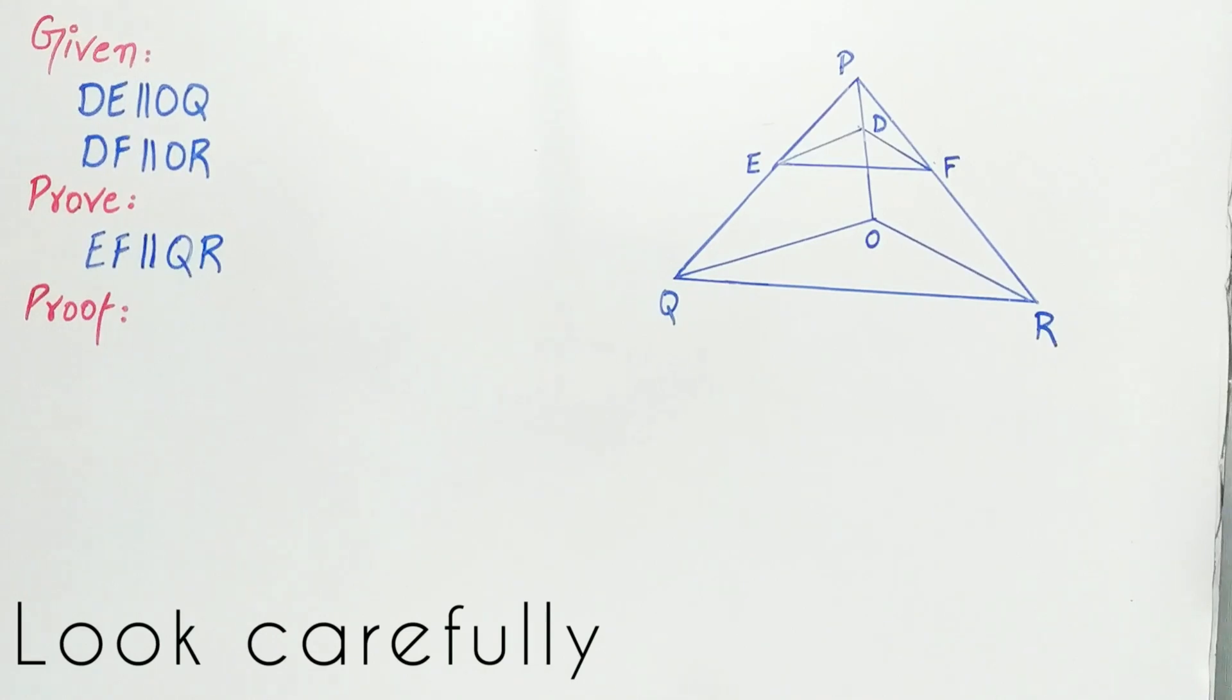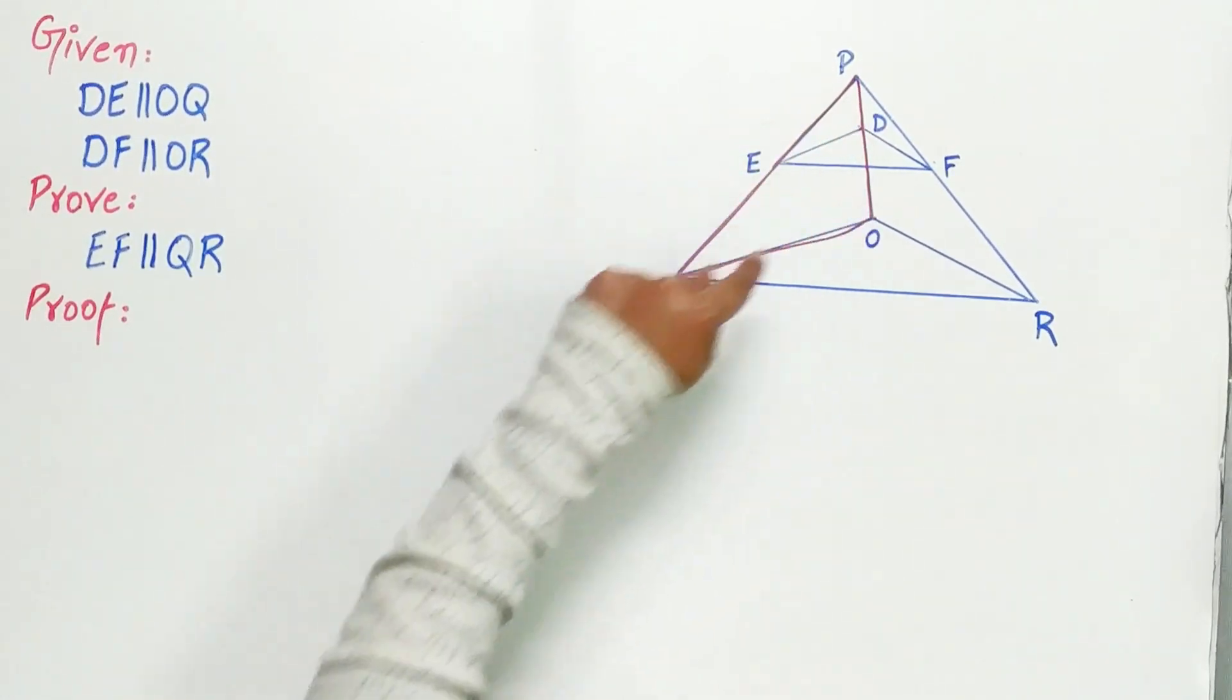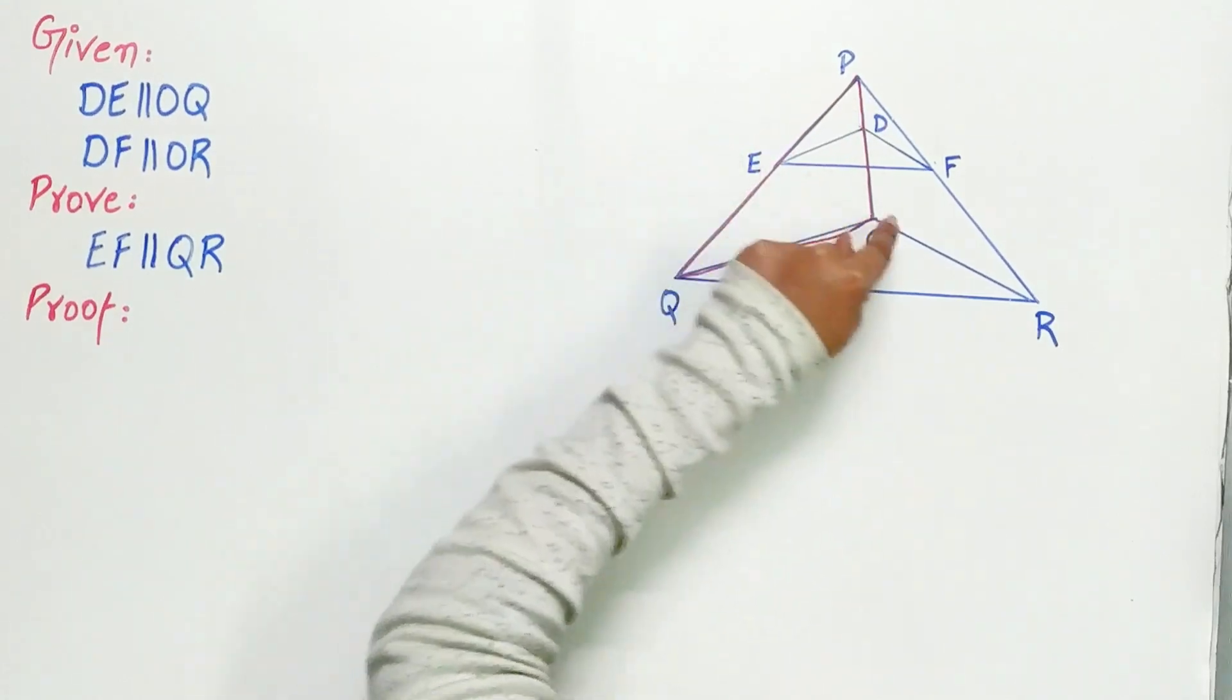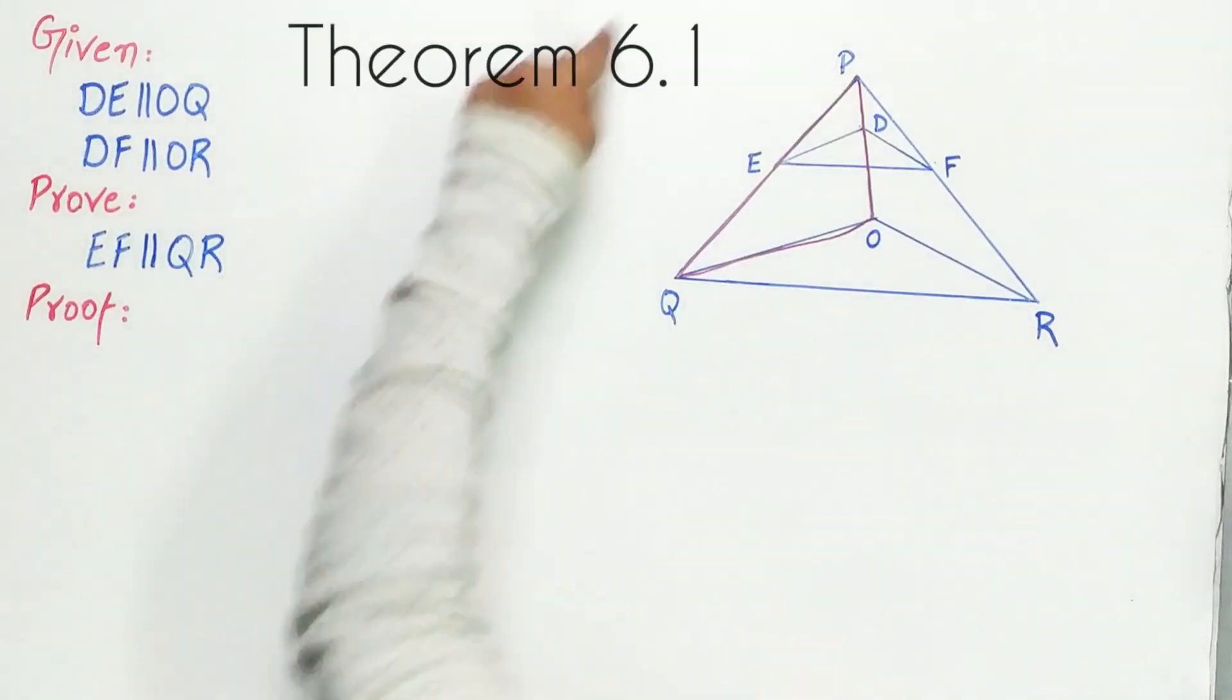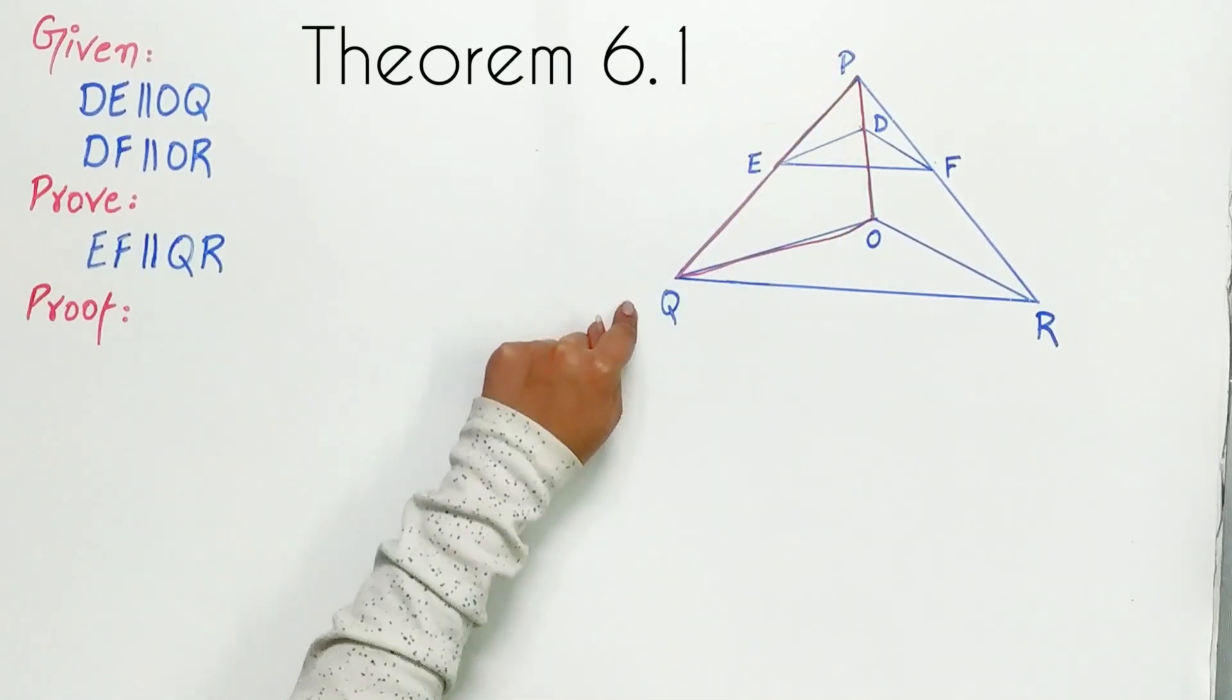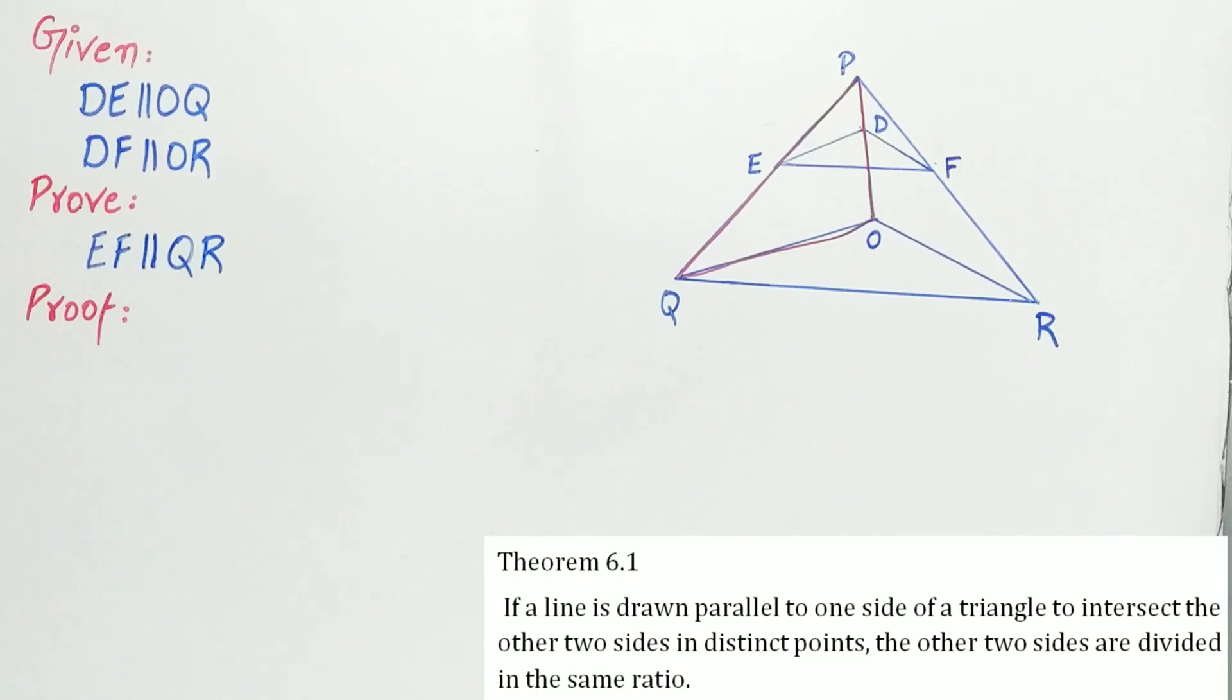Now look carefully. POQ is a triangle and DE is parallel to OQ. That is, DE is parallel to one side of the triangle. Hence, the other two sides of the triangle are in the same ratio via theorem 6.1.